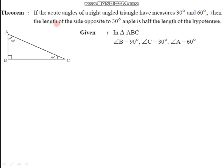Now in this triangle, we have to prove that the length of the side opposite to 30 degrees is half of the length of the hypotenuse. The side opposite to 30 degrees is AB and the hypotenuse is AC, as it is the side opposite to the right angle. So we have to prove that AB is equal to half of AC.